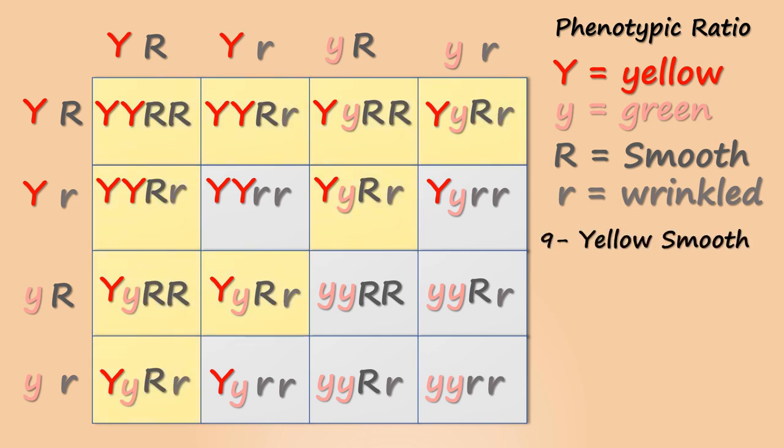Now, we know that capital Y is actually dominant over small y. So if we have capital Y and small y, capital Y will mask the expression of small y. So these seeds will be yellow in color and they won't be green in color. Similarly, where we have capital R and small r, capital R is dominant over the recessive small r. So if capital R is present, the phenotype will be smooth and it will not be wrinkled. So total we have 9 yellow smooth phenotypes.